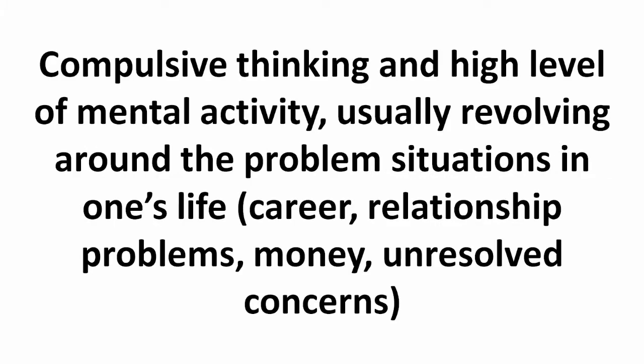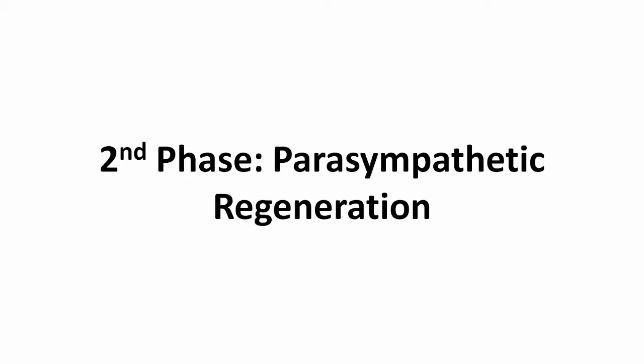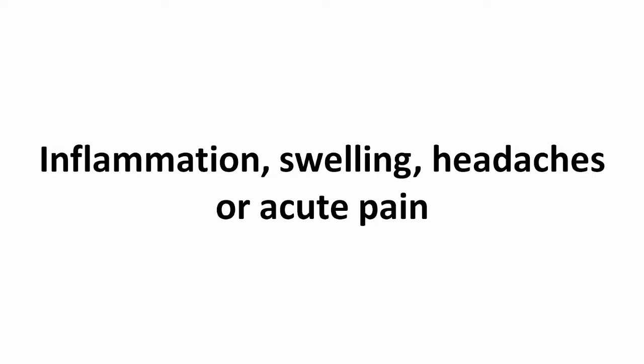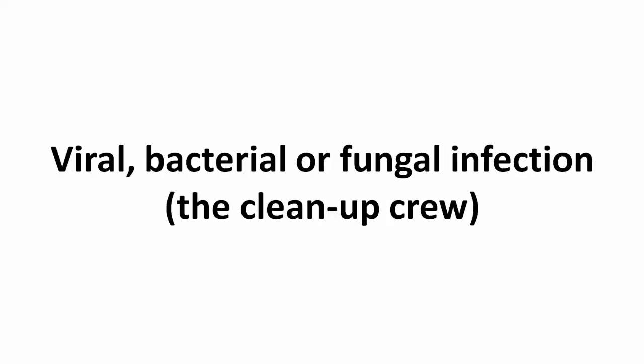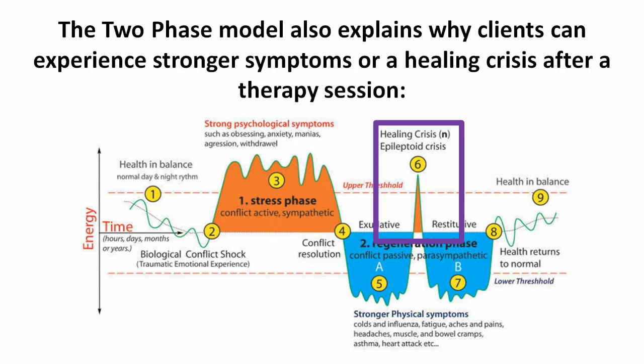Other first-phase markers include sleeplessness, insomnia, feeling stressed, anxious or worried, compulsive thinking and a high level of mental activity usually revolving around the problem situation such as career, relationships or money, as well as elevated blood pressure, fast heart rate and increased stress hormones. For phase 2, which is parasympathetic regeneration, look for tiredness and apathy, an increased desire to rest, an inability to think clearly, inflammation, swelling, headaches or acute pain, viral, bacterial or fungal infections — which is the clean-up crew — and lower blood pressure and heart rate. The two-phase model also explains why clients can experience stronger symptoms or a healing crisis after a session; these are signs of even deeper healing.